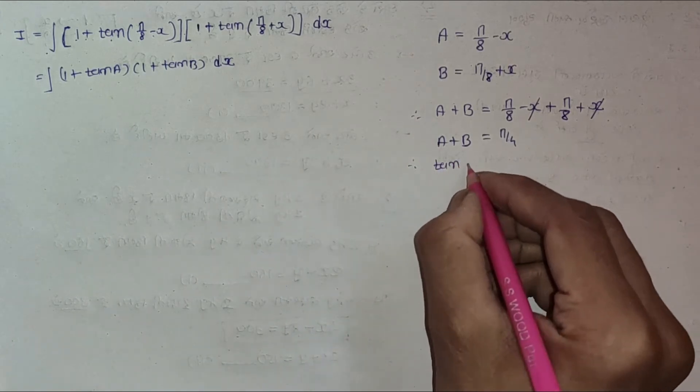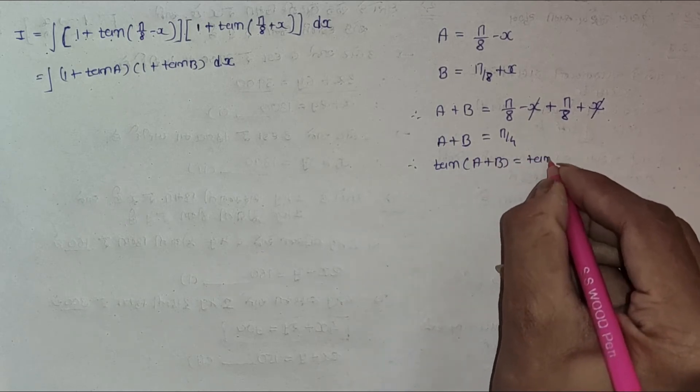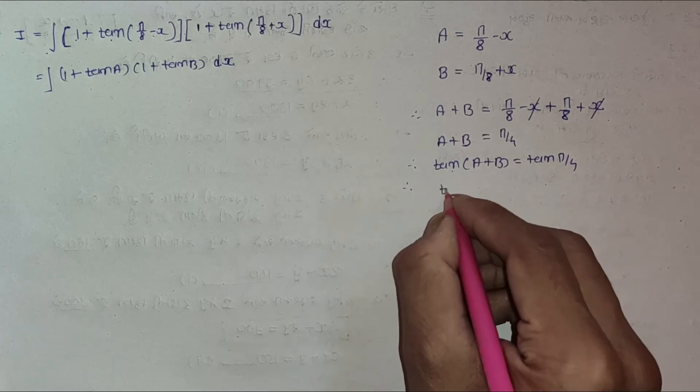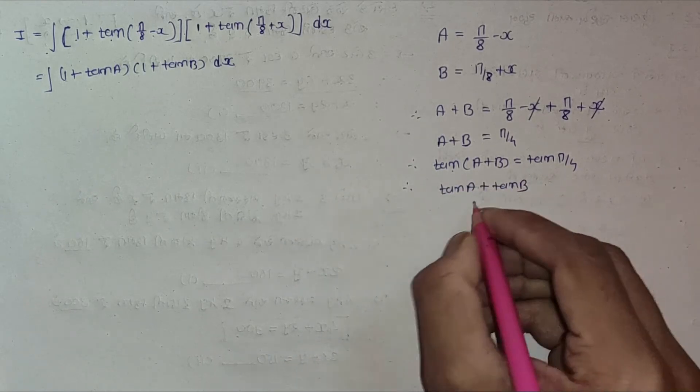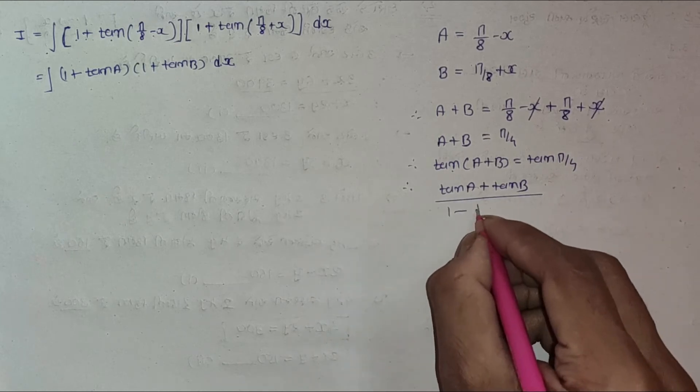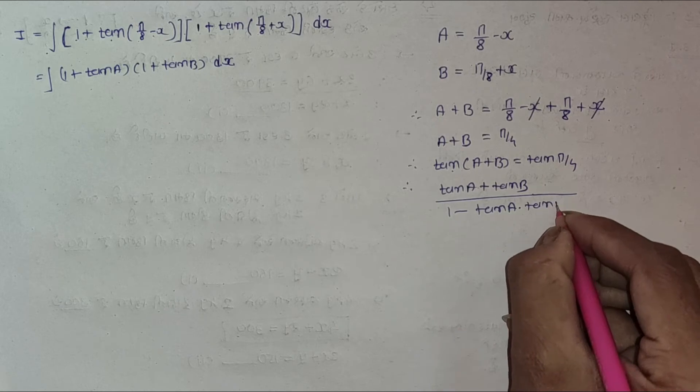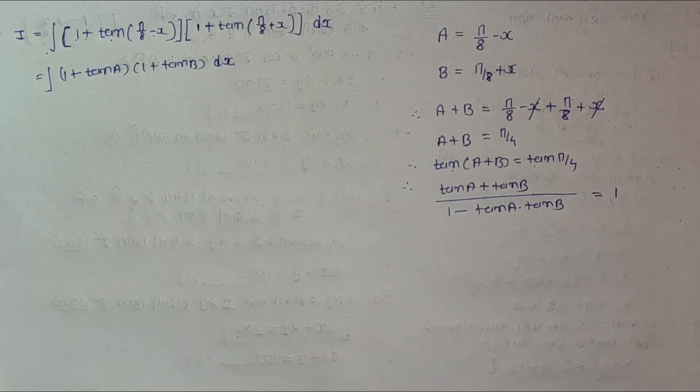Now apply tan to both sides. So tan(A + B) equals tan(π/4). Now tan(A + B) is (tan A + tan B)/(1 - tan A · tan B) equals tan(π/4) which is 1.